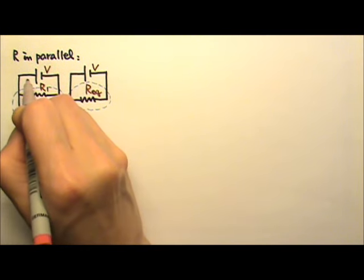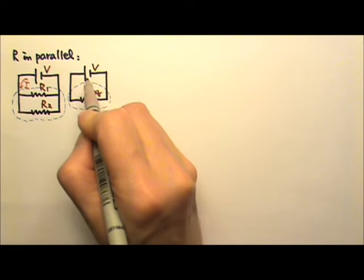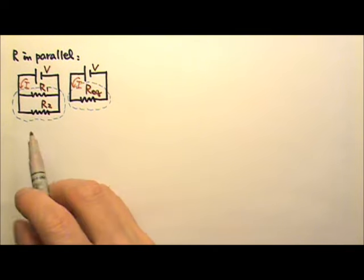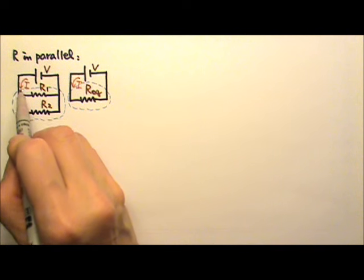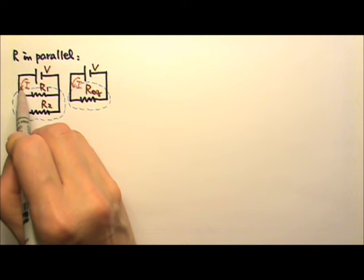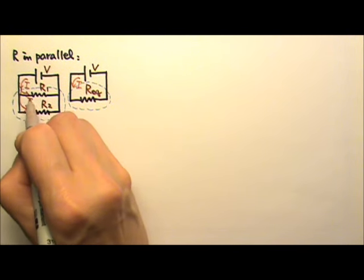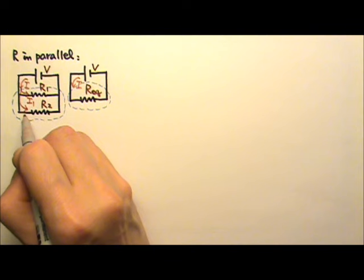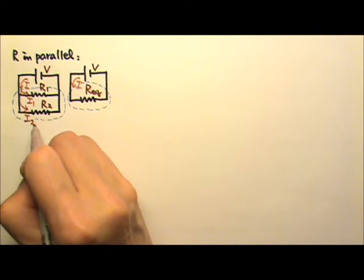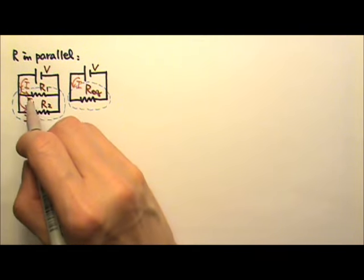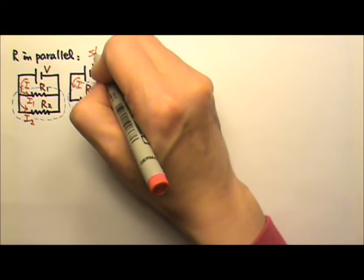So if this battery pumps the current I, that battery should do the same — same current I. But when this current comes over here, it would split into two currents I1 and I2. So when resistors are in parallel like this, they share the current.